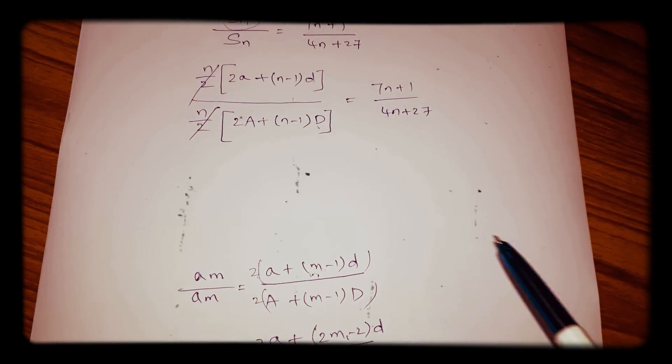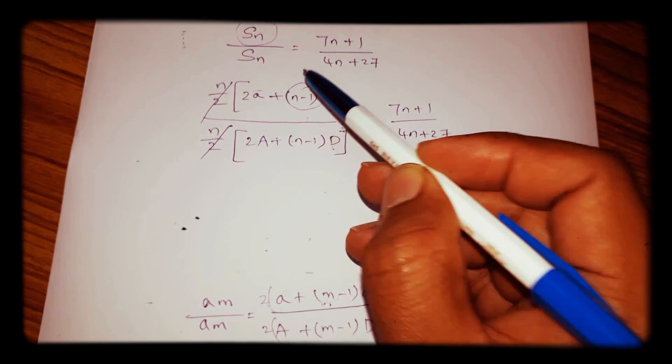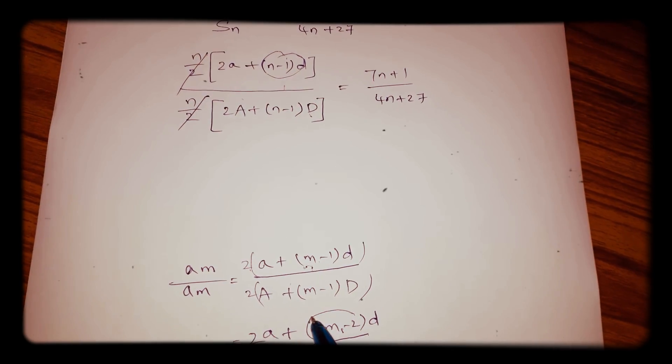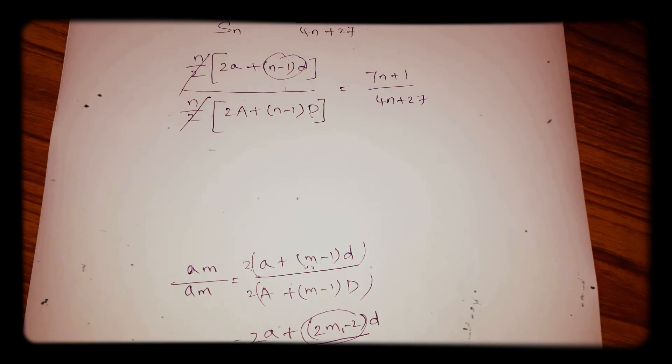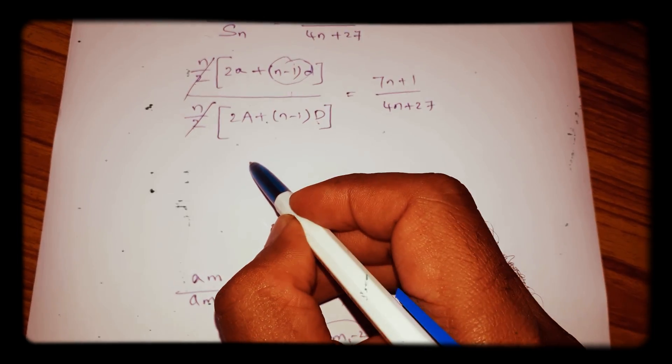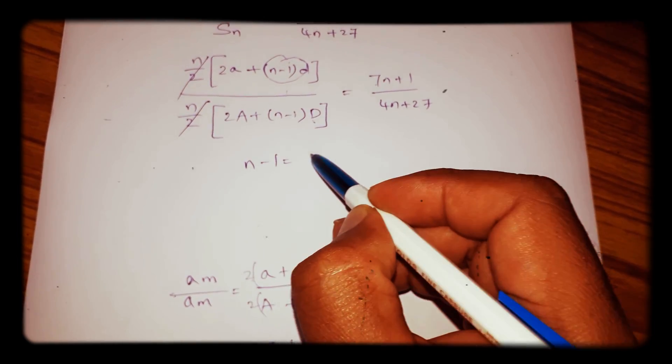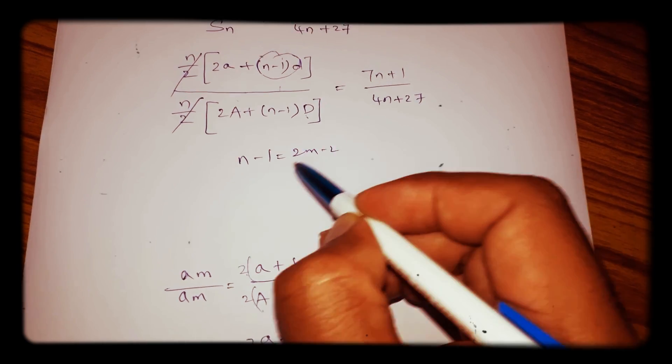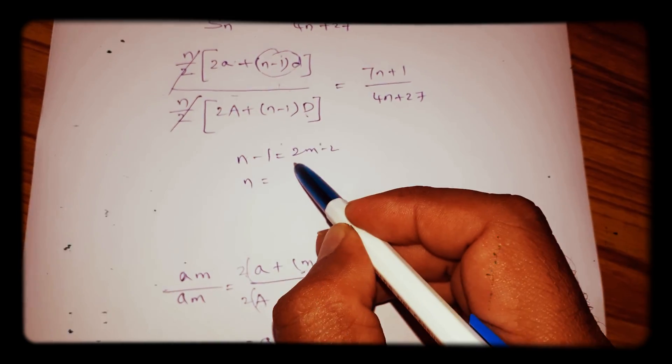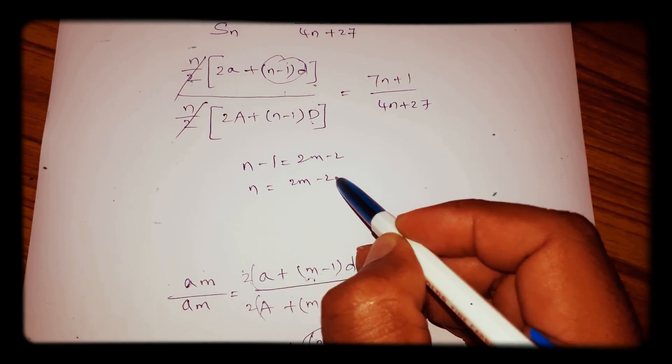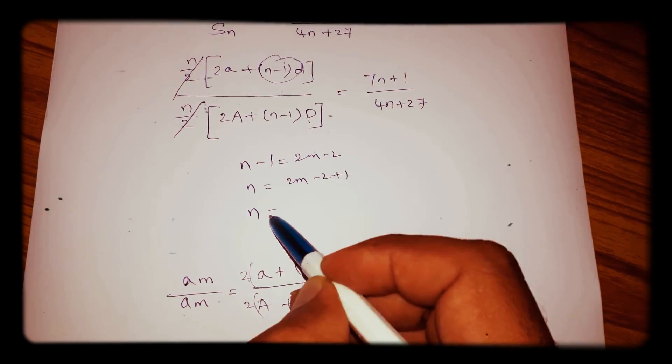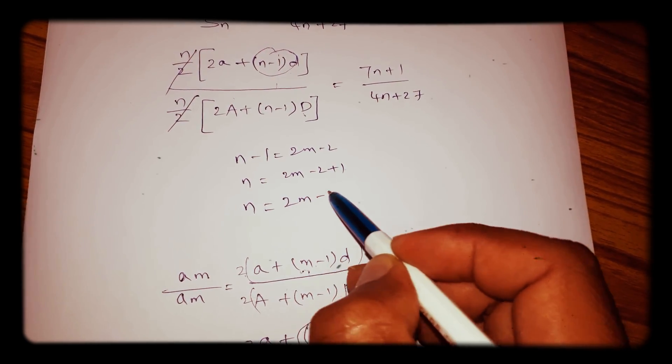So to compare these two, here we have (n-1), here we have (2m-2). So this (n-1) equals (2m-2), so n = 2m - 2 + 1, so n = 2m - 1.